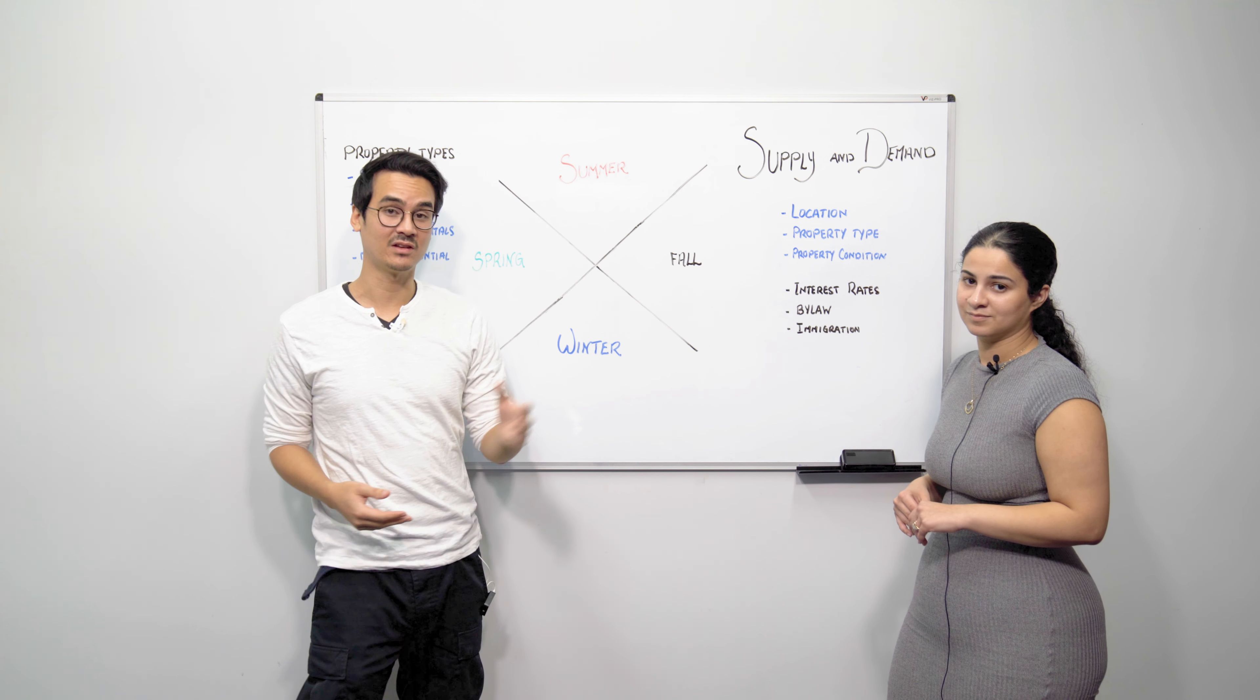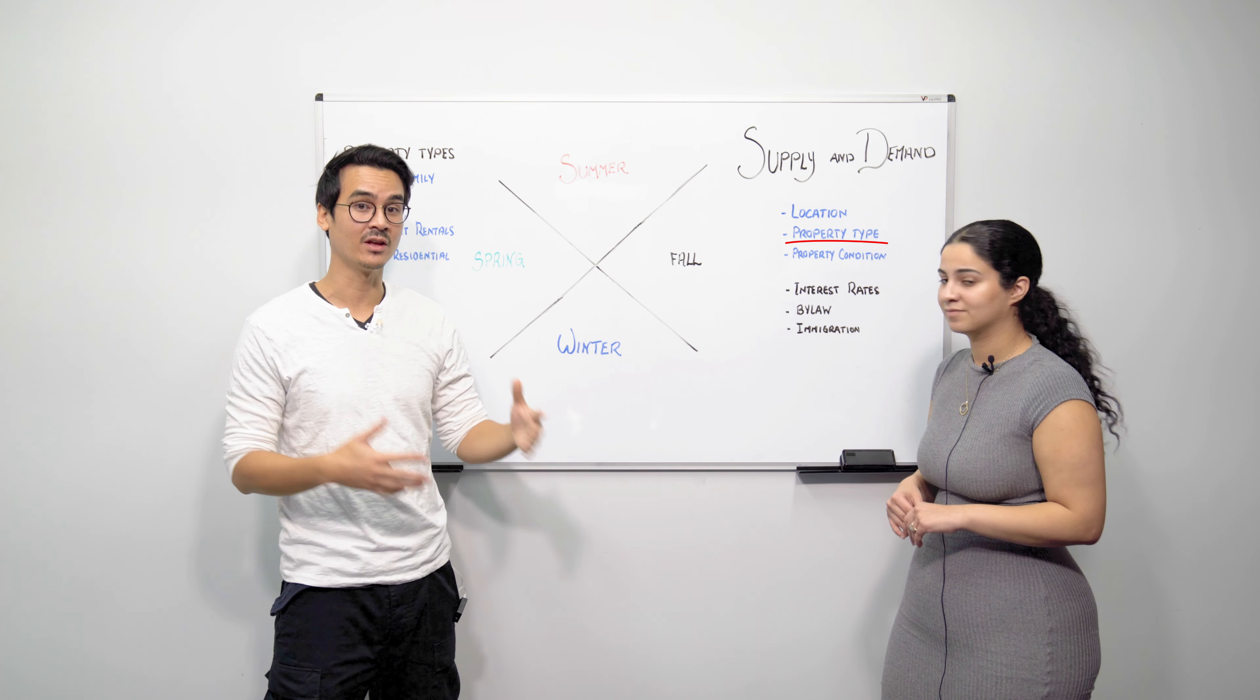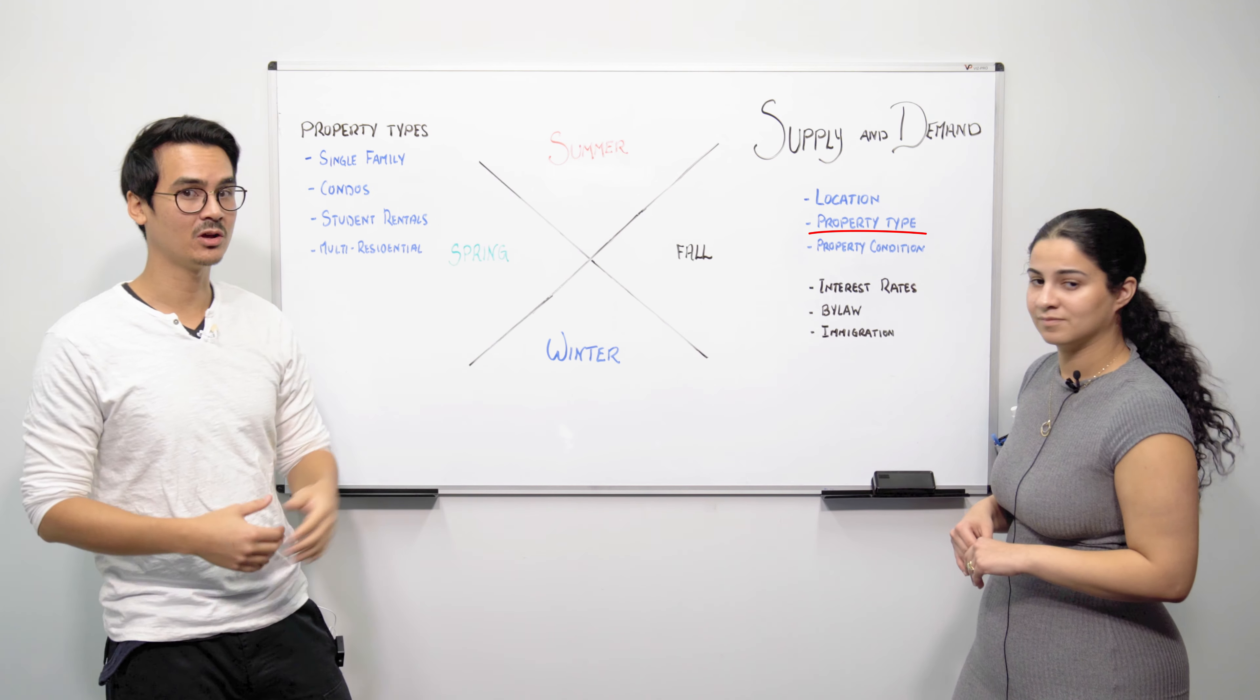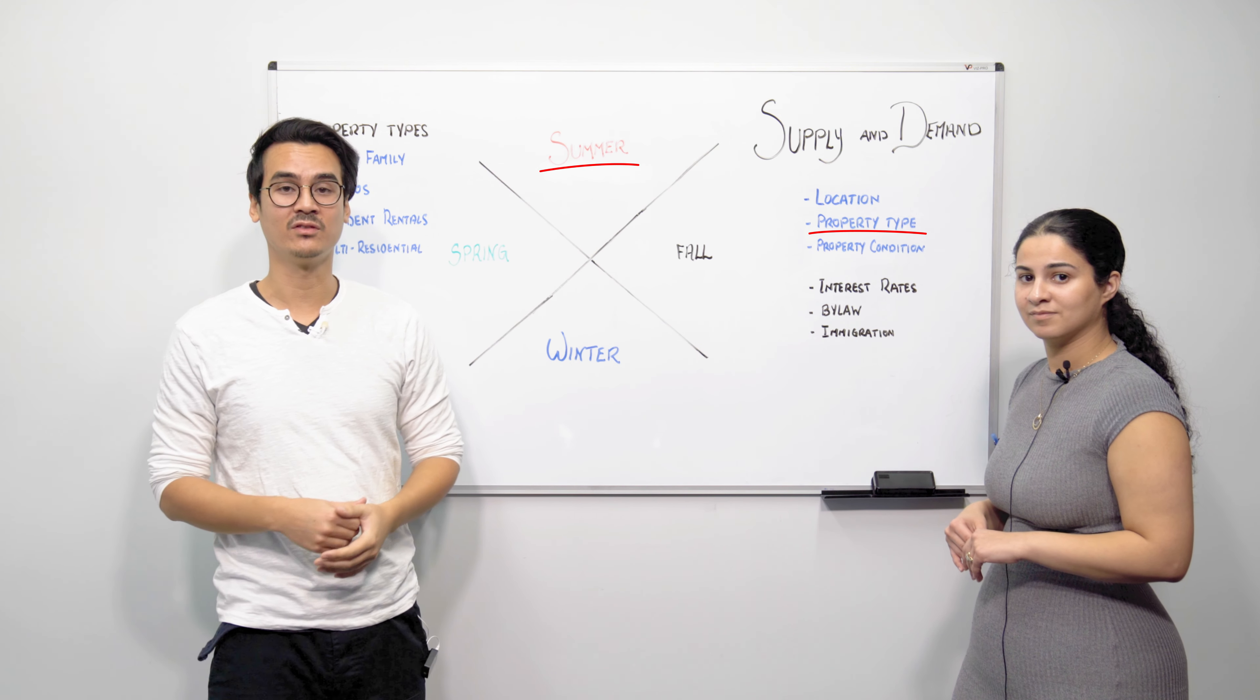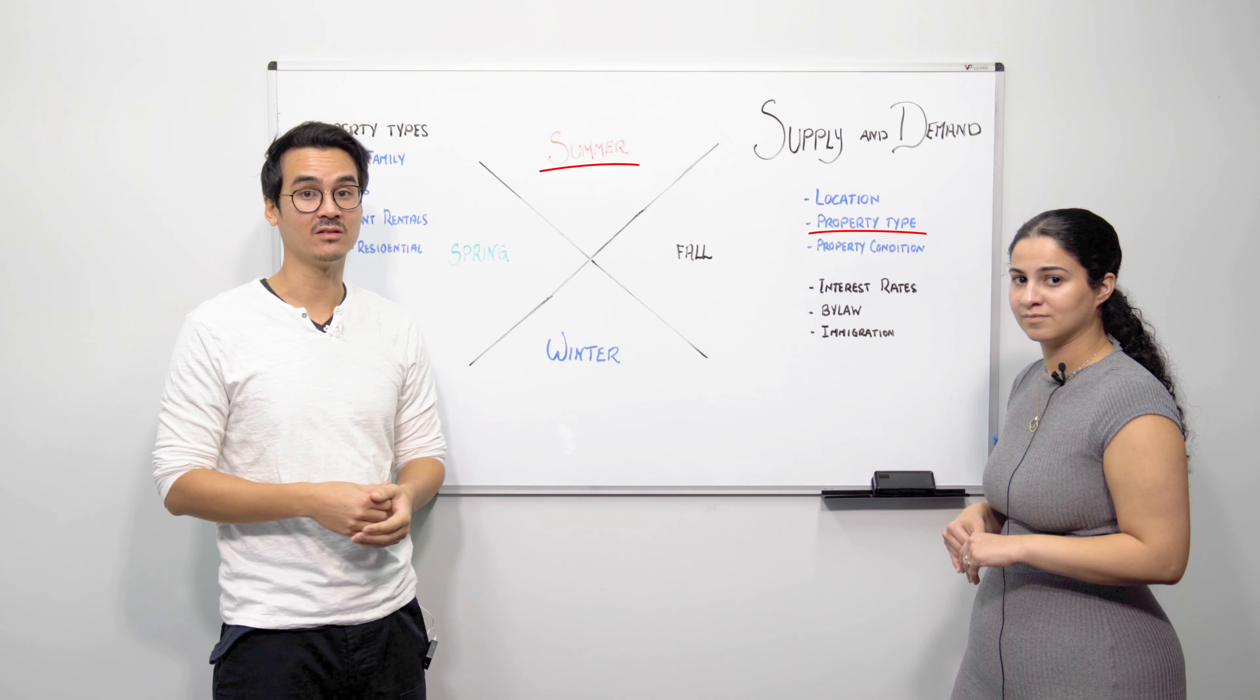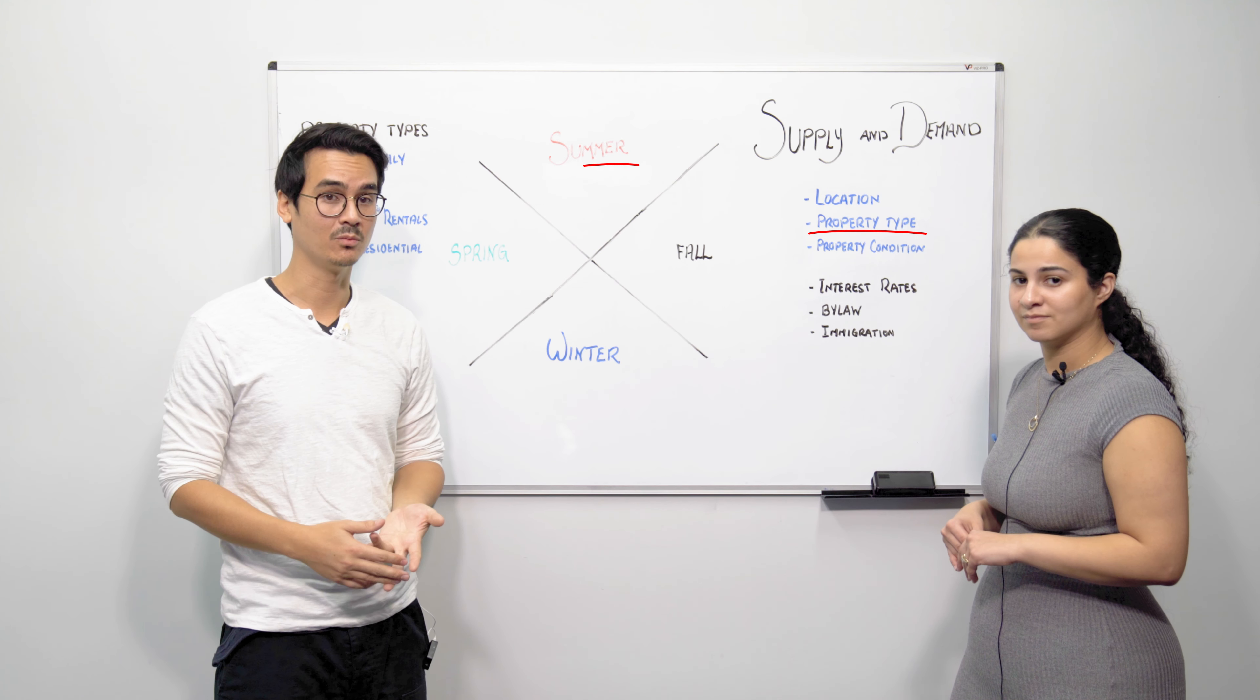Another factor that plays largely into this is actually the property type. If you have a single family home you're going to look at the combination of factors that are affecting your property a little bit differently. For example, if you have a single family home, summer and seasons will obviously play a big role because people typically don't want to move around when their kids are in school so summer time would be the time for them to buy a place and make their move.